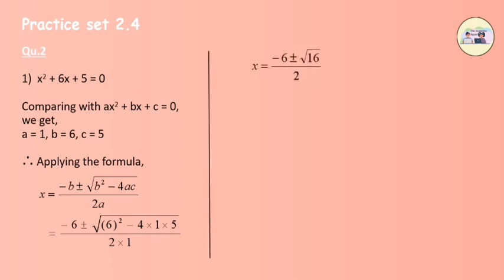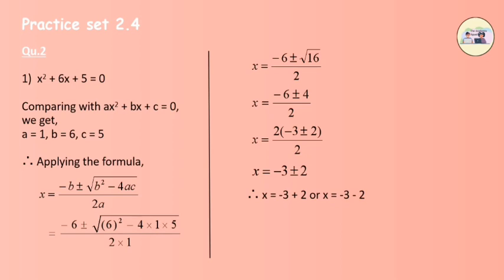Therefore x = (-6 ± √16) / 2, which equals (-6 ± 4) / 2, which simplifies to 2·(-3 ± 2) / 2 = -3 ± 2. Therefore x = -3 + 2 or x = -3 - 2, giving x = -1 and x = -5. This is the solution.